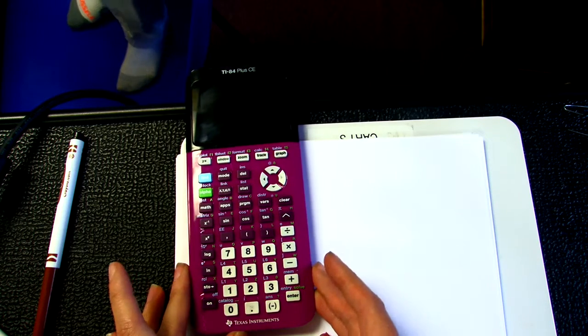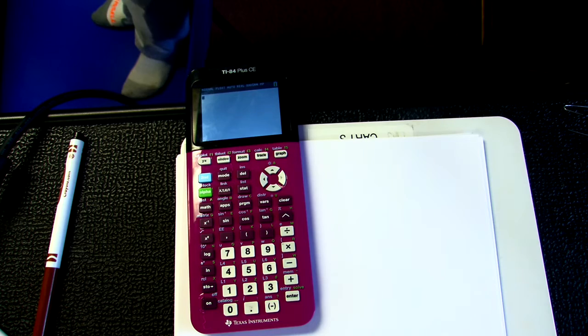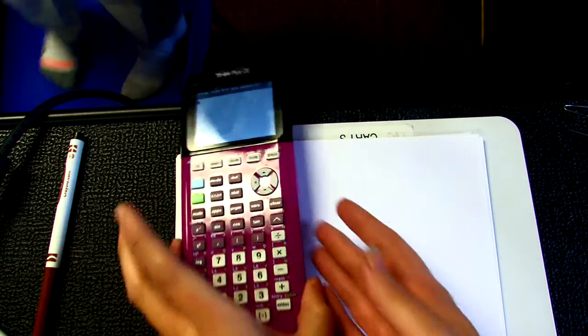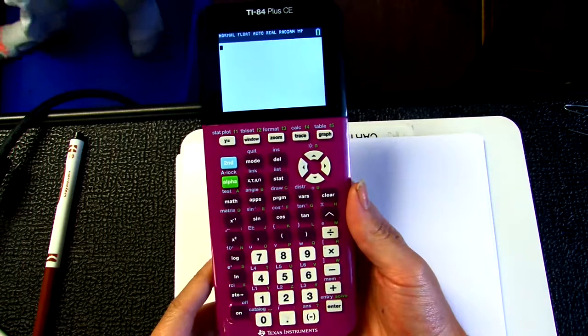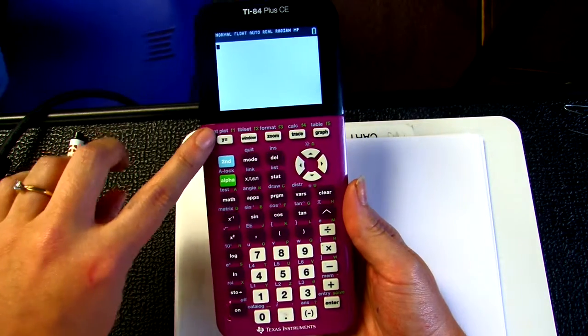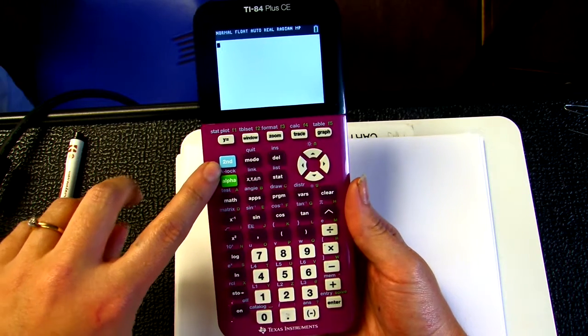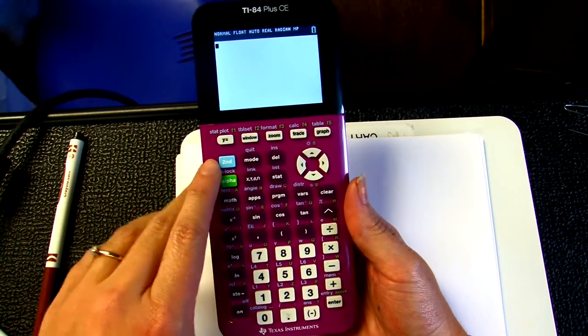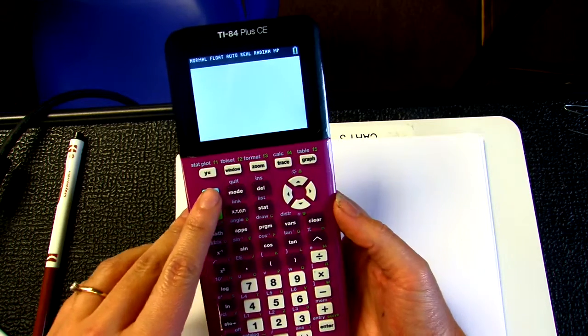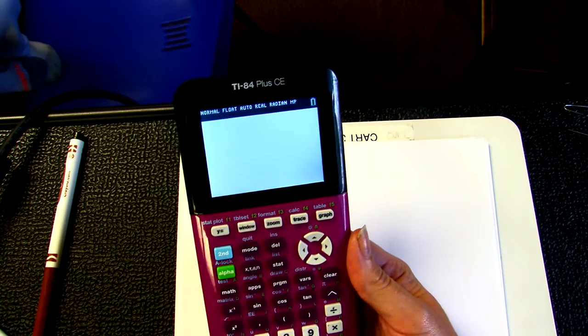Here's how you clear the memory. The first thing you do is make sure the calculator is on, and then you're going to hit the Second button. The Second button is in the top left-hand corner. The first button you see says Y equals, and the one right underneath it says Second. That's the button you're going to press first. Then notice on the screen there's a little arrow that's flashing—that's how you know you hit the button.